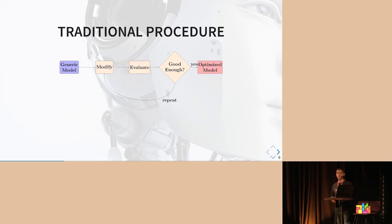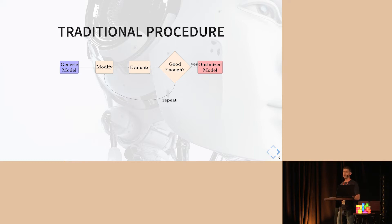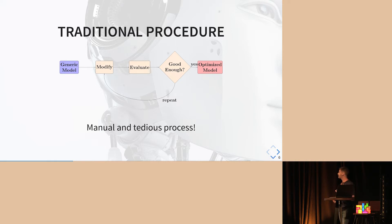The traditional procedure to optimize a state-of-the-art model to run on embedded devices is to take a model, try to modify it in some way — you have many methods to do that — then retrain your model and evaluate its performance. If it's good enough, you're done. If not, you repeat the process until you have a good enough model for your use case. This procedure is very manual and tedious work, because you do it by hand.